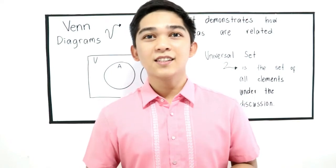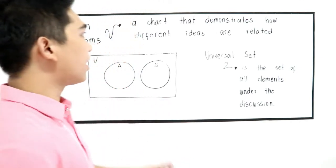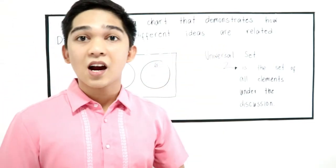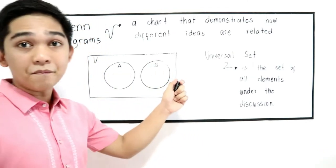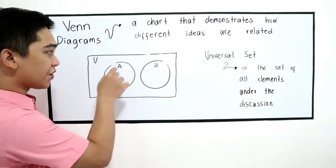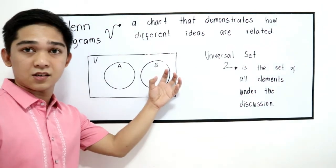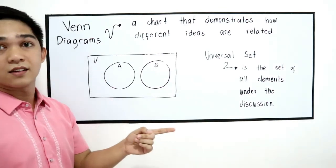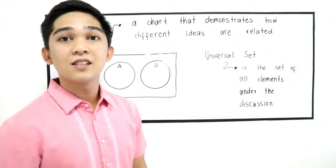Hello to all incoming grade 7. A Venn diagram is a chart that demonstrates how different ideas are related. We have this Venn diagram with two circles which determine two different sets, and we have the U, which is the universal set. By definition, the universal set is the set of all elements under the discussion.